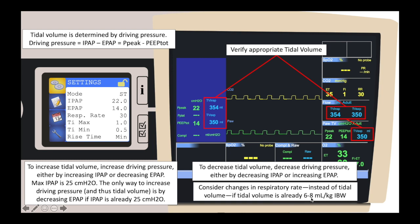If the delivered tidal volume is already in a lung protective range of 6 to 8 milliliters per kilogram of ideal body weight, consider adjusting the respiratory rate instead. If the respiratory rate is under 35, it can be adjusted upward to increase minute ventilation and improve CO2.